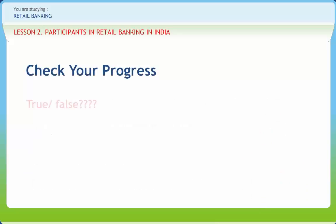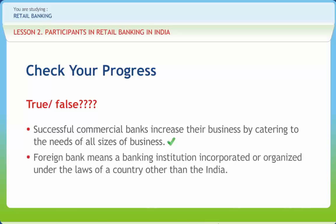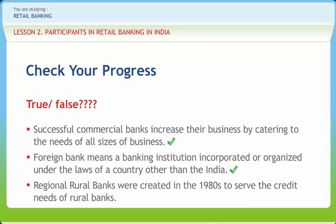Let us check if we have understood the various concepts discussed in this lesson. Successful commercial banks increase their business by catering to the needs of all sizes of business — Right. Foreign bank means a banking institution incorporated or organized under the laws of a country other than India — Right. Regional rural banks were created in the 1980s to serve the credit needs of rural banks — Wrong.